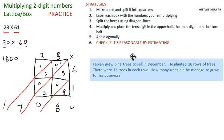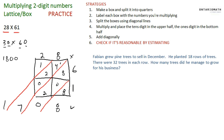Now I'm just going to jump to a quick word problem so we can practice using multiplication in a word problem. Fabian grew pine trees to sell in December. He planted 18 rows of trees. There were 32 trees in each row. How many trees did he manage to grow for his business?